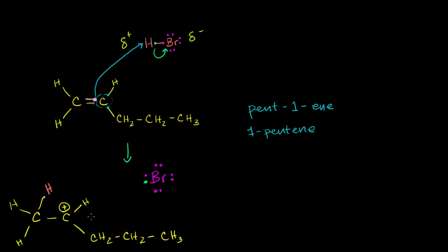So this is what we are left with after that step of the reaction. And of course, bromine over here was neutral — it had seven valence electrons. But now it has eight, so it has a negative charge because it gained an electron. In general, our total charge over here is zero. We have a negative and a positive that cancel out, so our total charge is still zero.